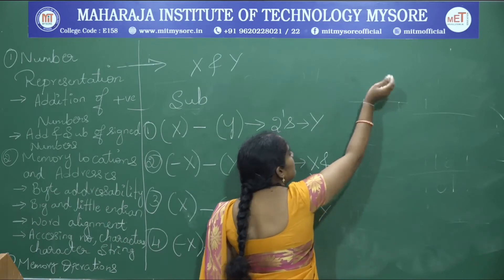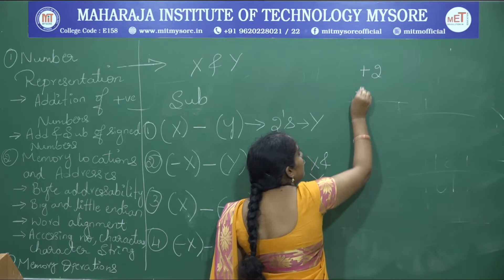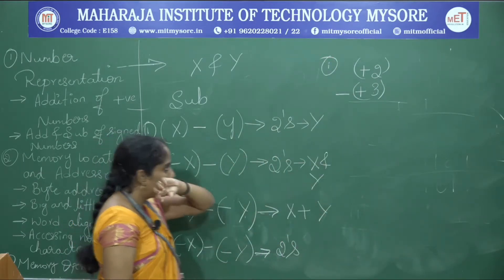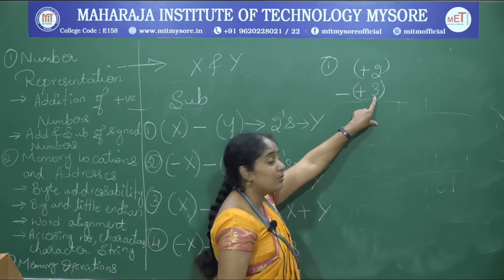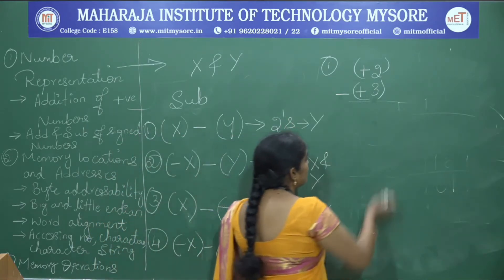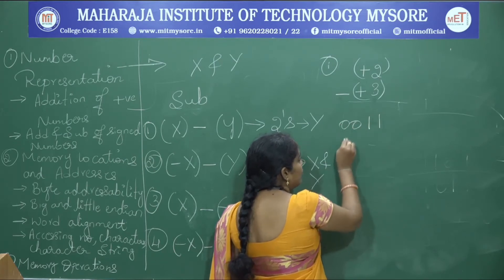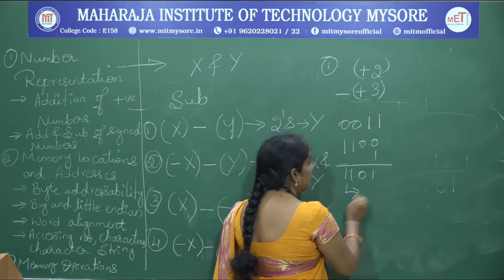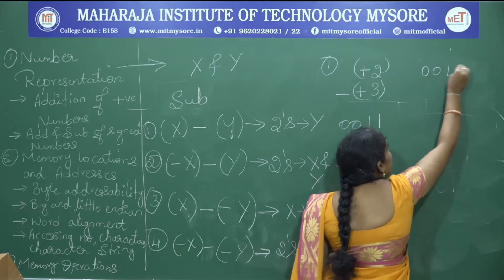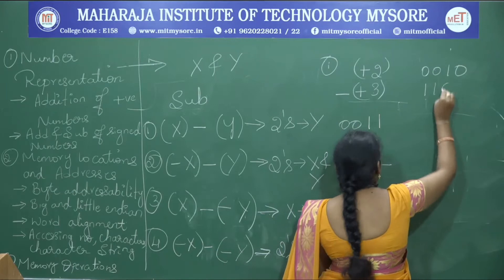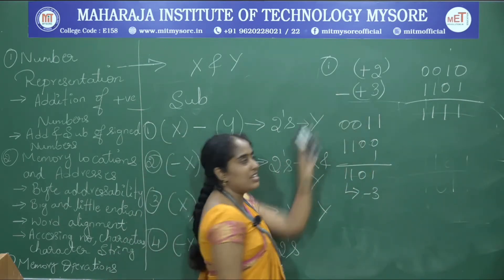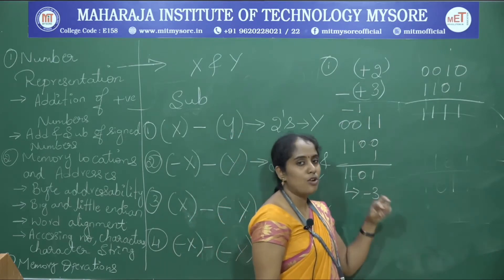Take the example: subtract plus 3 from plus 2. For x=2 (0010) and y=3 (positive), take the two's complement of 3. Three is 0011, one's complement is 1100, add 1 gives 1101 for minus 3. Adding 0010 and 1101 gives 1111. The answer is minus 1.